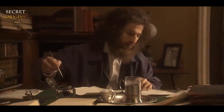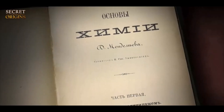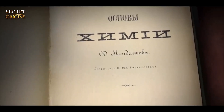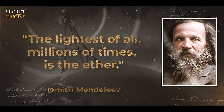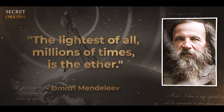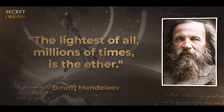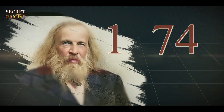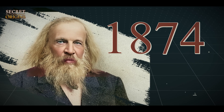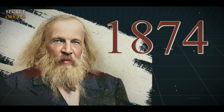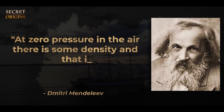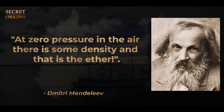In an appendix to the textbook Fundamentals of Chemistry on the Periodic Table, Mendeleev wrote in 1871: 'The lightest of all, millions of times, is the ether.' And in 1874, in a workbook, the scientist was even more categorical: 'At zero pressure in the air there is some density, and that is the ether.'